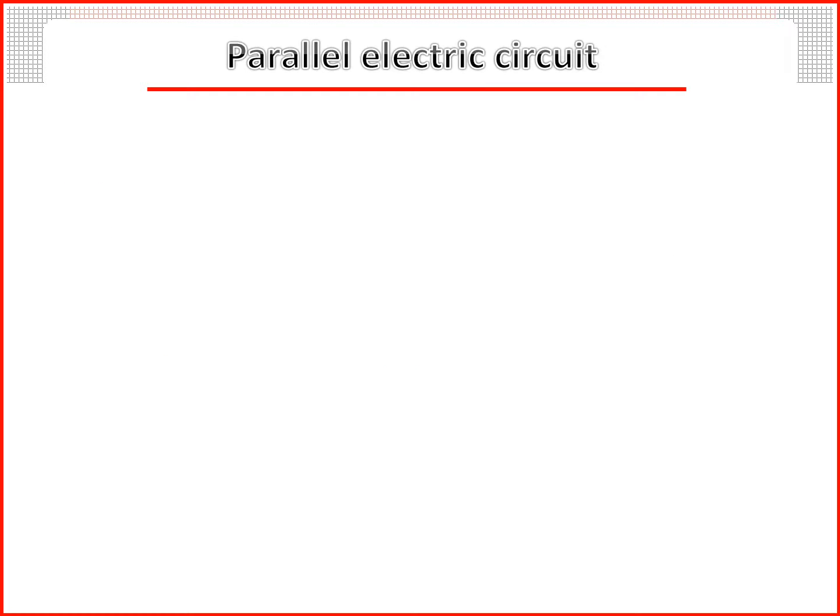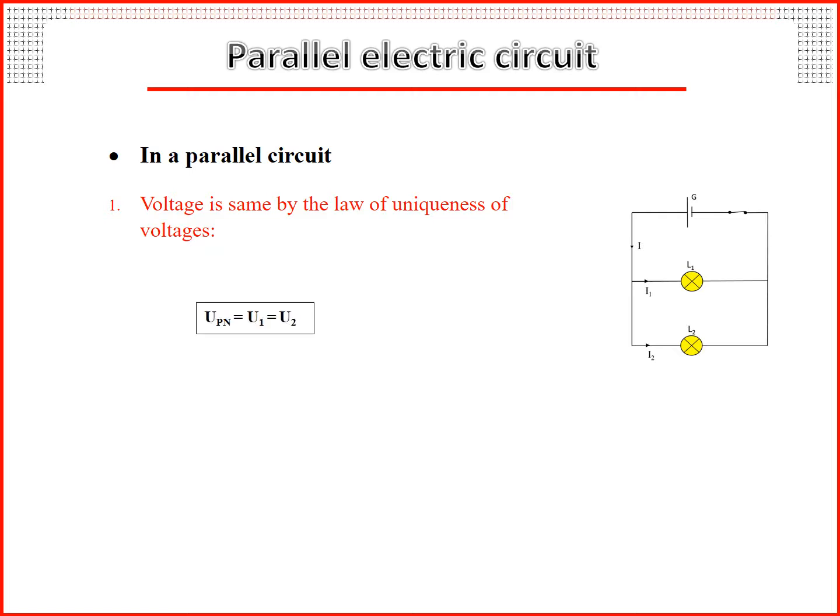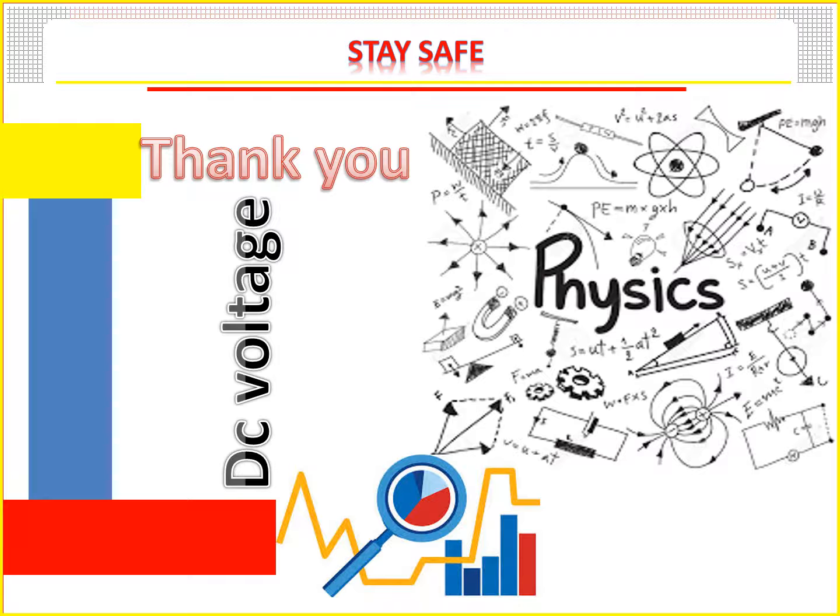Parallel electric circuit. In a parallel circuit, the voltage is same by the law of uniqueness of voltages: UPN = U1 = U2. Current is additive: I = I1 + I2. Thank you.